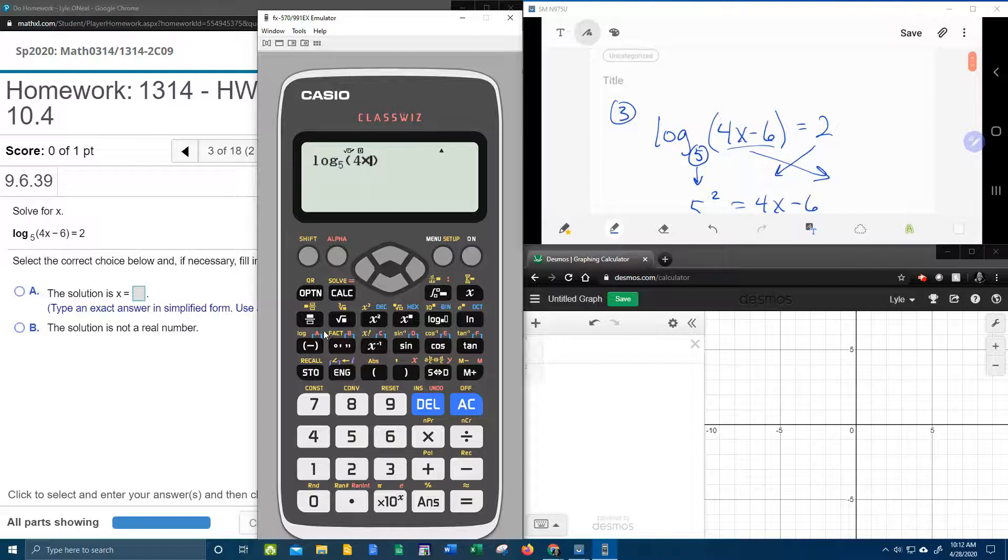So if I plug in 31 fourths in for x minus 6, do you understand? This should work out to equal 2 if our x is correct, and that proves it.